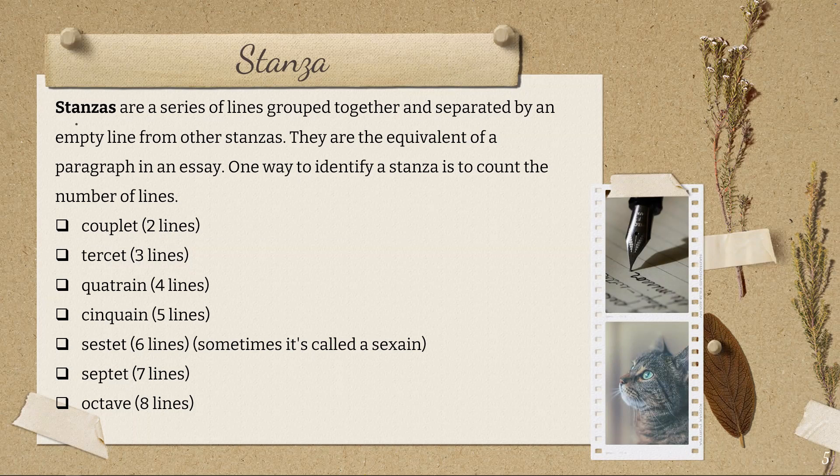If it's two lines, we call it a couplet. Three lines, a tercet. Four lines, a quatrain. Five lines, a cinquain. Six lines, a sestet — sometimes called a sixain. Seven lines, a septet. And eight lines, an octave.